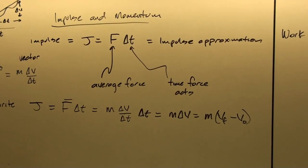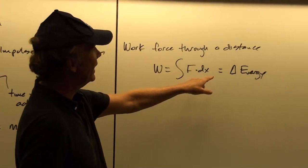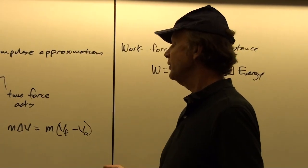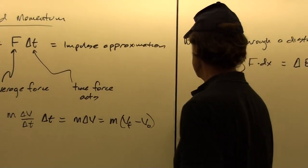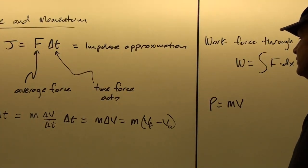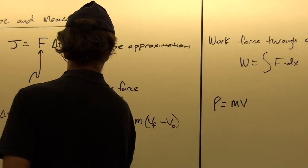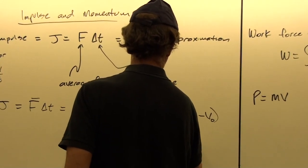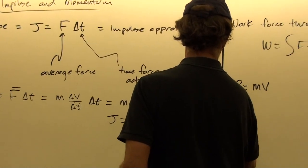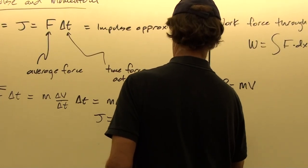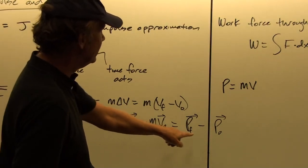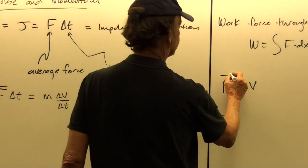So if we follow the same mathematics we did with work-energy, we can define momentum as being the thing that changes. If we define momentum as mass times velocity, then our impulse J is going to equal mv_final minus mv_initial, or p_final minus p_initial. Since the impulse is a vector, the momentum is also a vector.